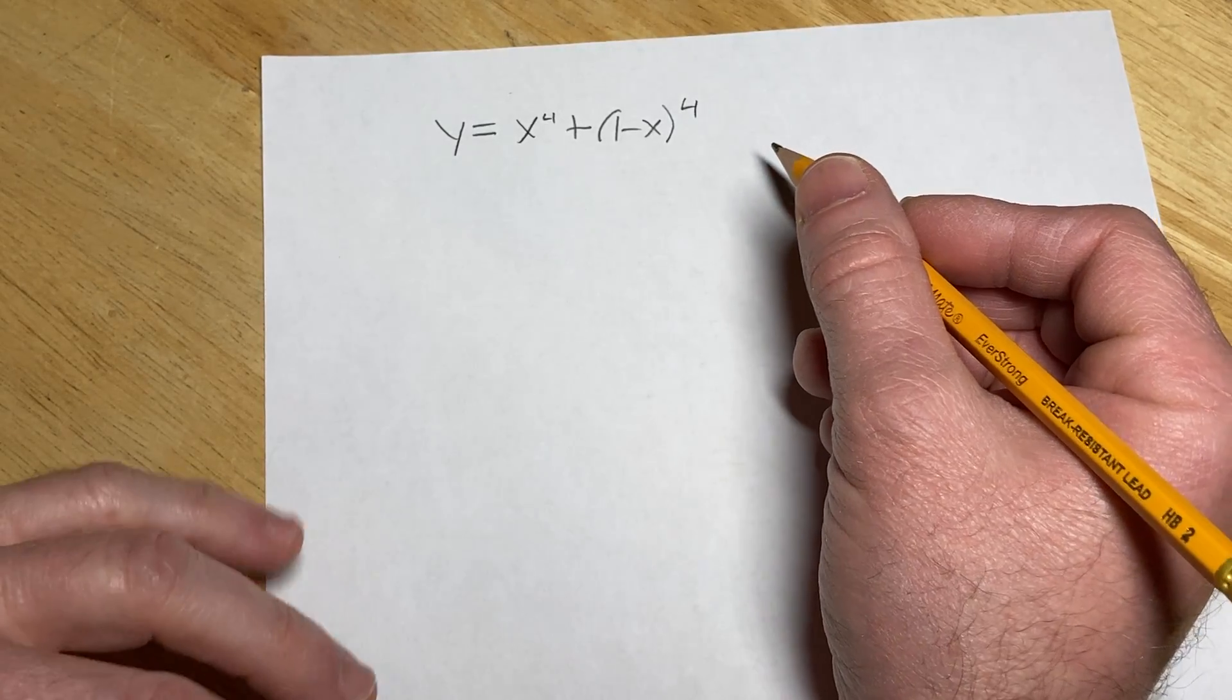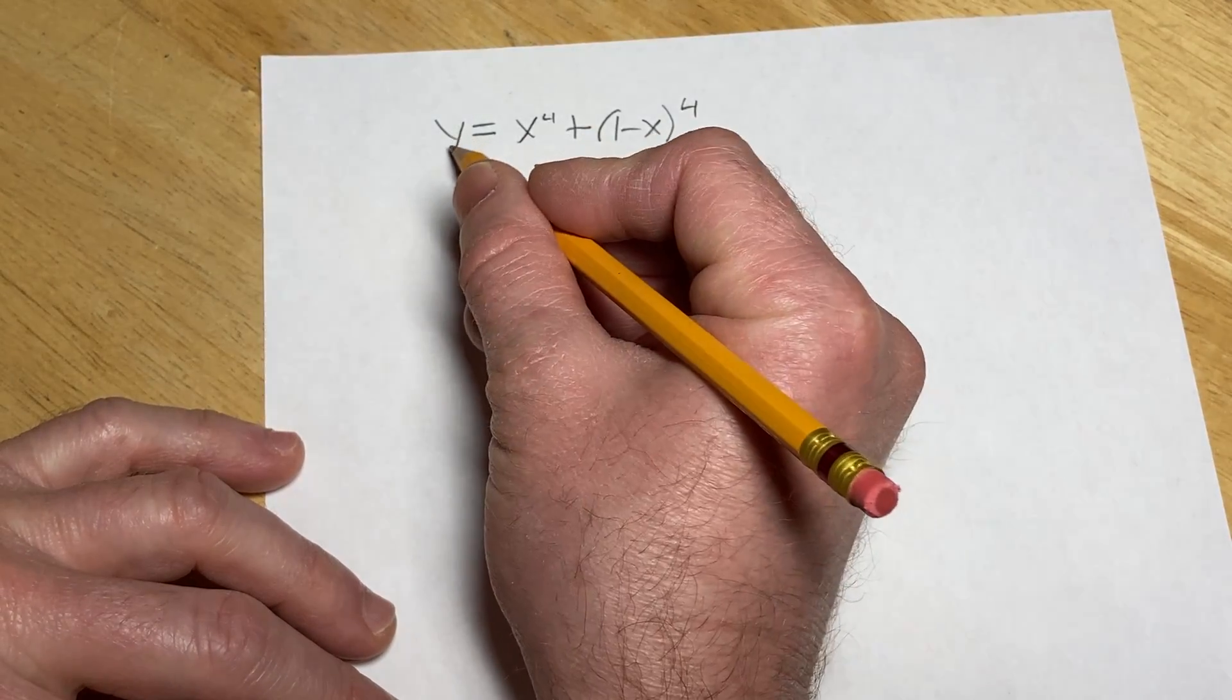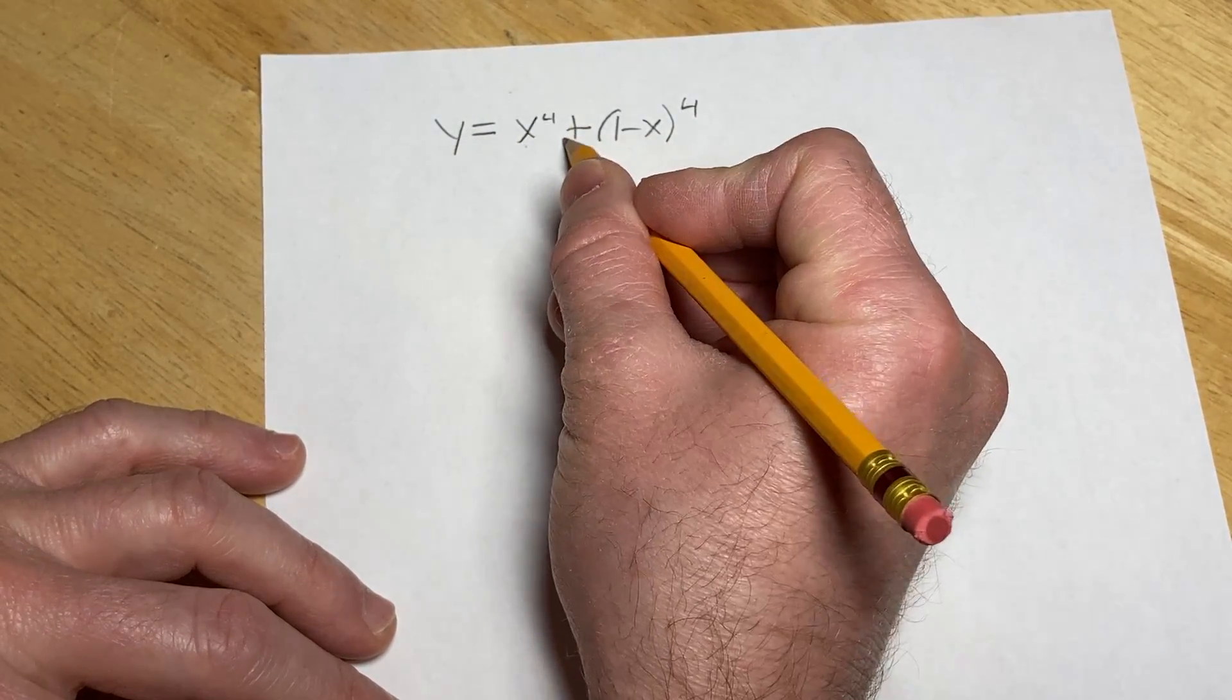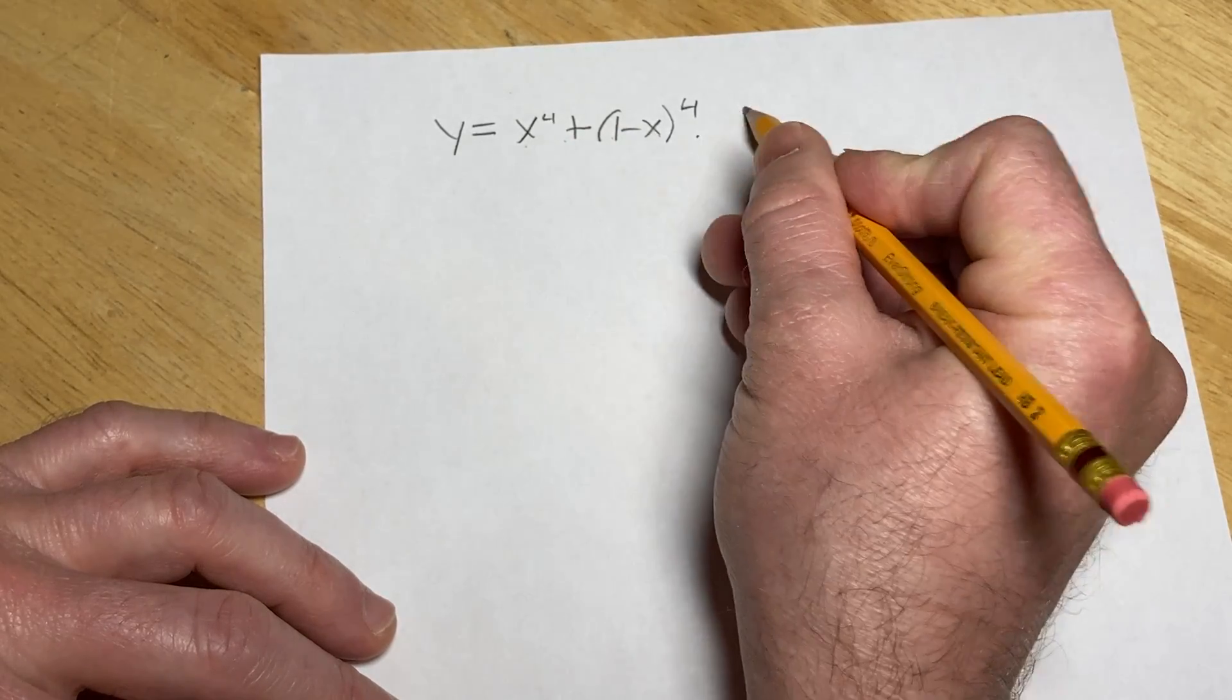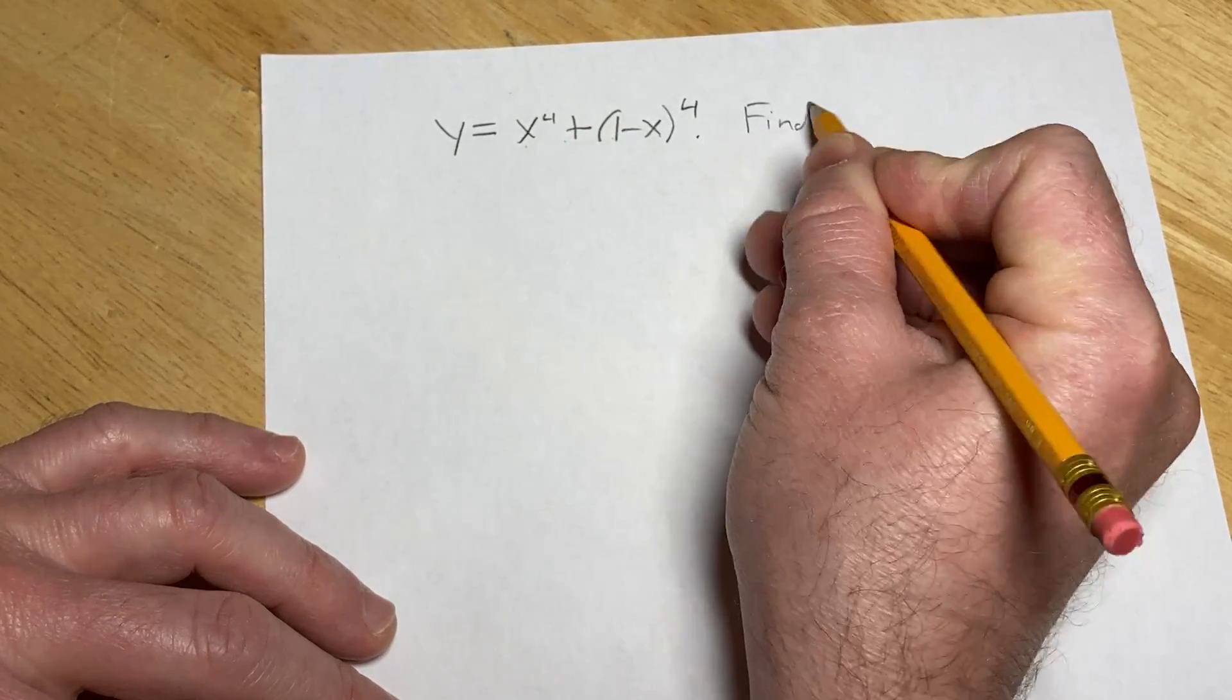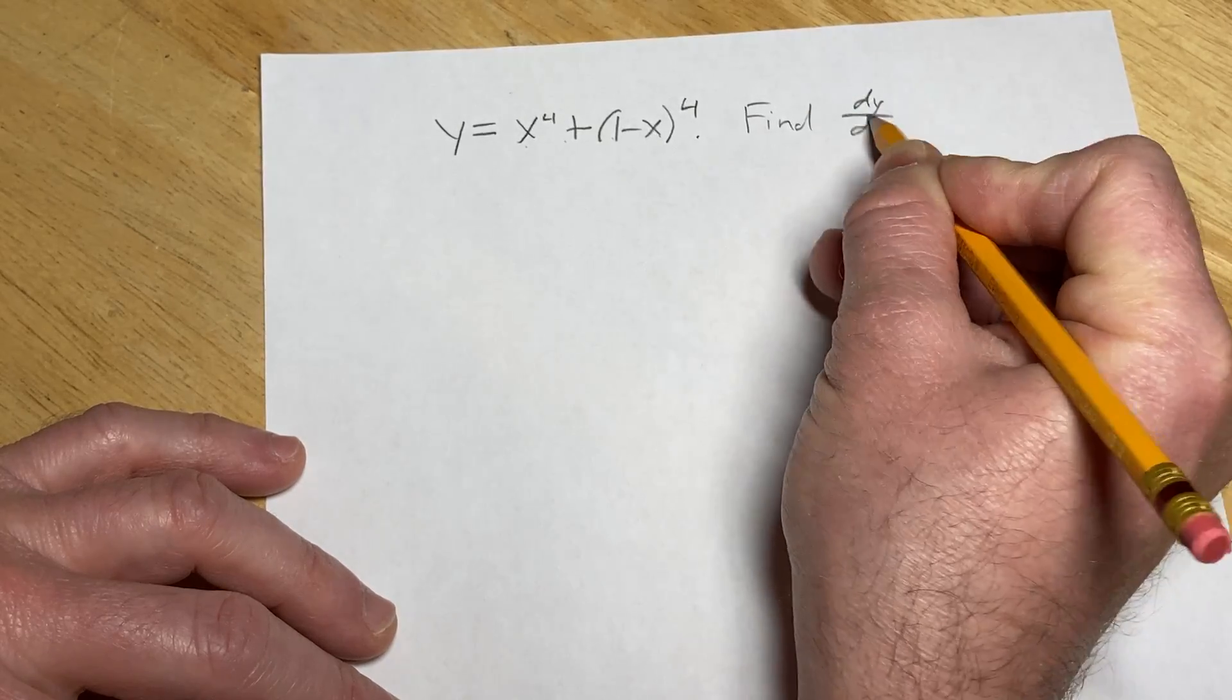Hi, in this video we're going to be finding a derivative. We have y equals x to the fourth plus the quantity 1 minus x to the fourth power, and we're going to find dy dx.